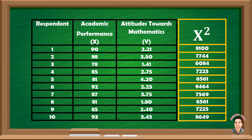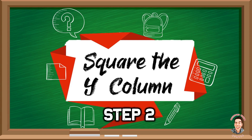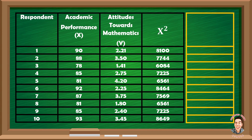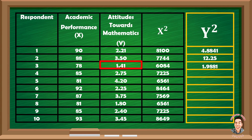Step 2: Square the y column. Squaring the y column, which represents attitudes towards mathematics, we have: 2.21 squared equals 4.8841; 3.50 squared equals 12.25; 1.41 squared equals 1.9881; 2.75 squared equals 7.5625; 4.20 squared equals 17.64; and 2.25 squared equals 5.0625.